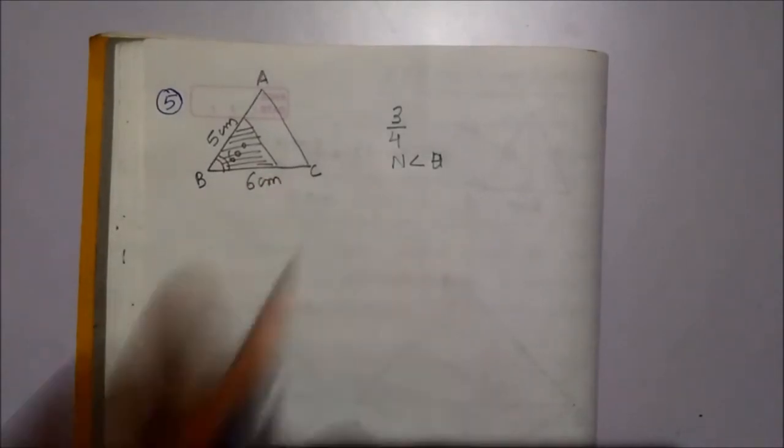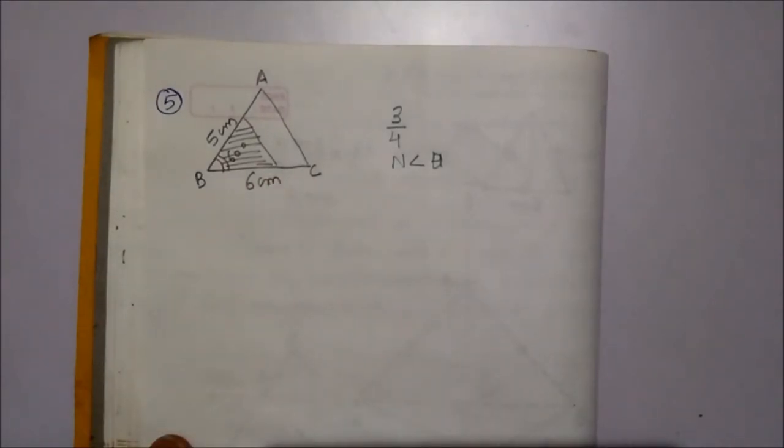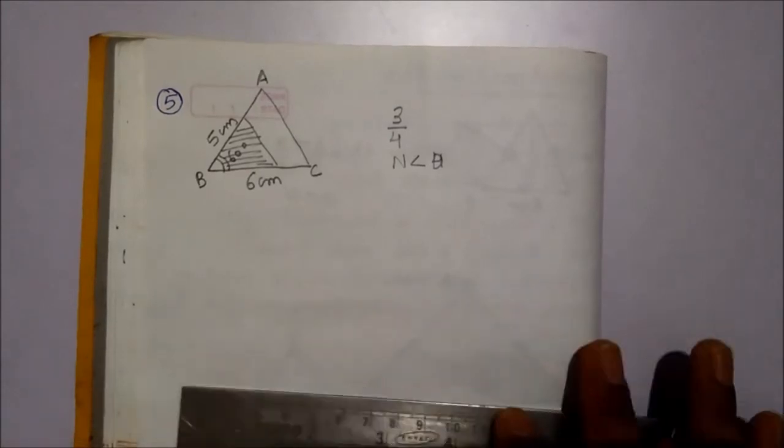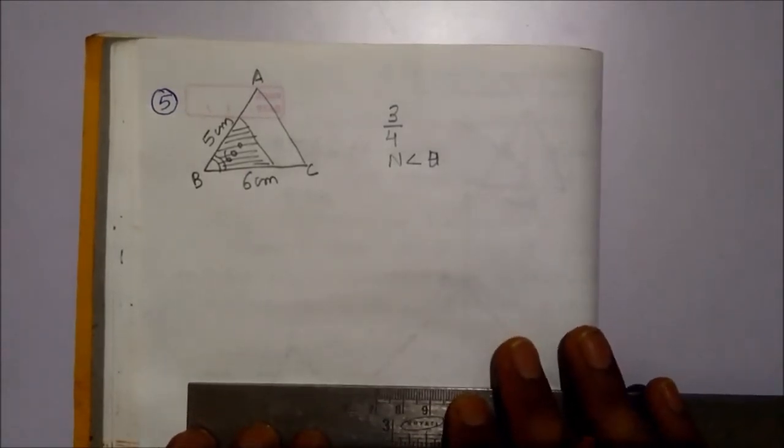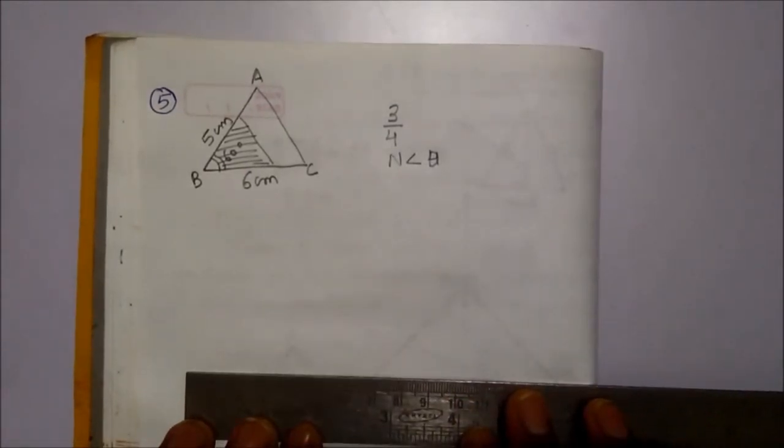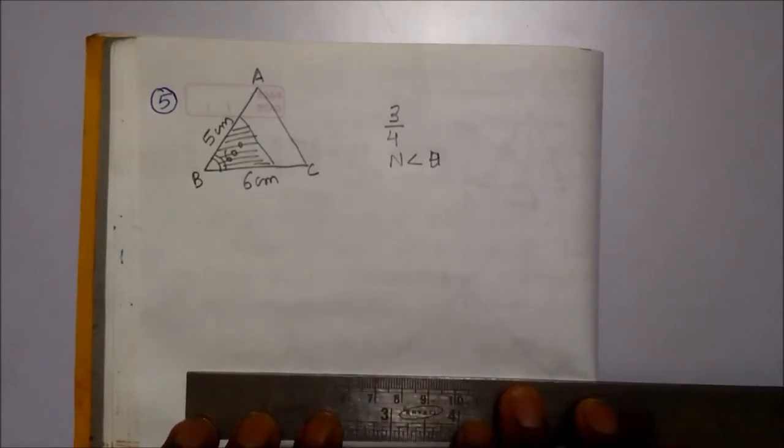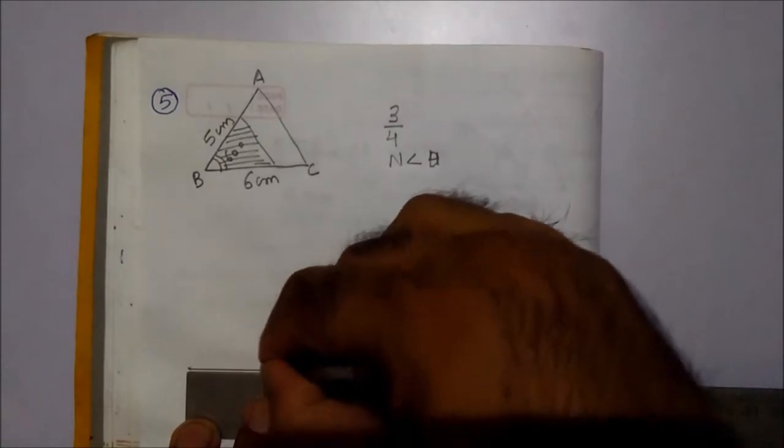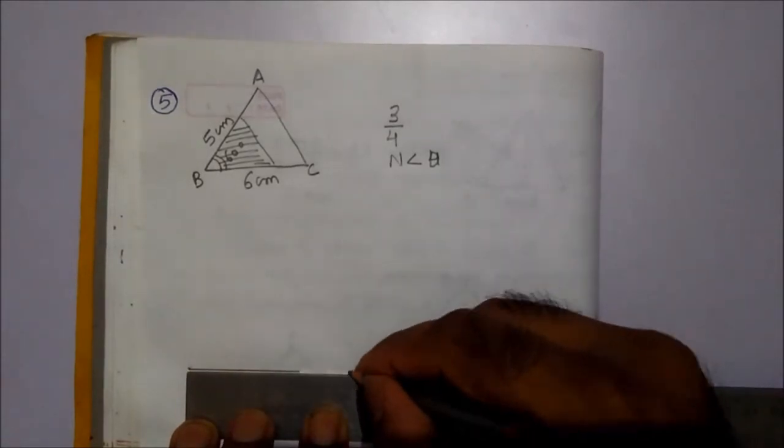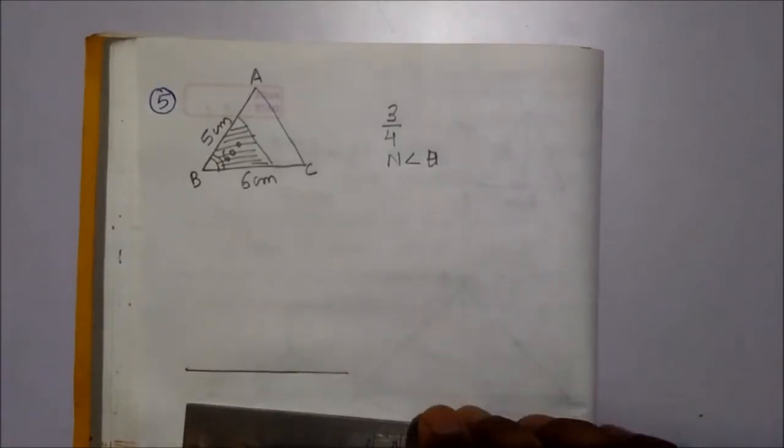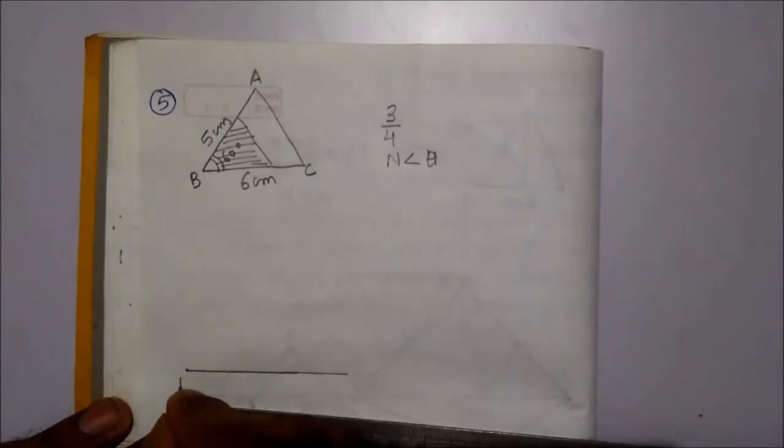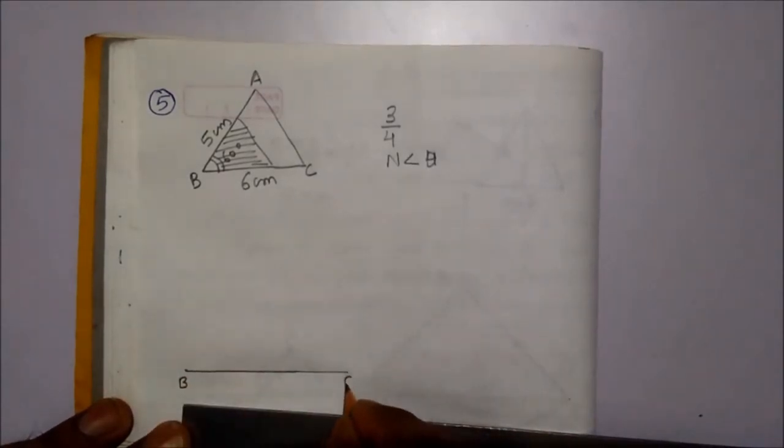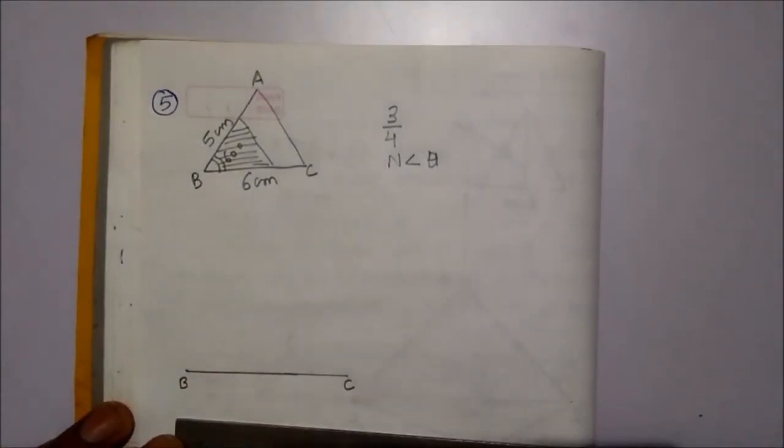So, very first draw BC of 6 cm. This is our point B and this is C. So BC is 6 cm.